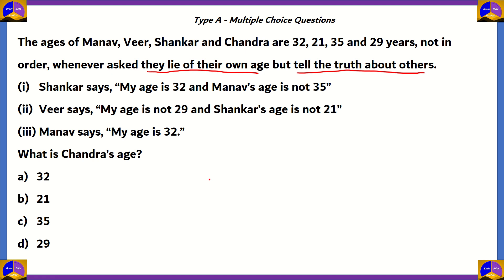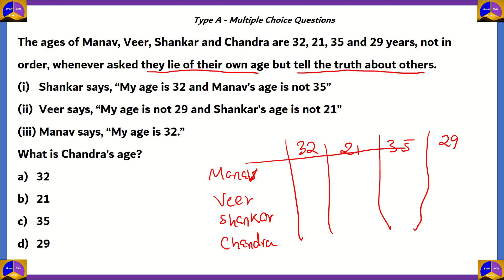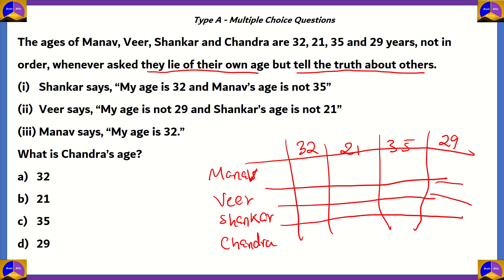We'll prepare a table with each person — Manav, Veer, Shankar, and Chandra — and the ages 32, 21, 35, and 29 across the top. First statement: Shankar says his age is 32. Since they lie about their own age, Shankar's age is not 32 — we put a cross for Shankar at 32.